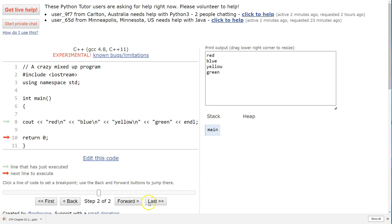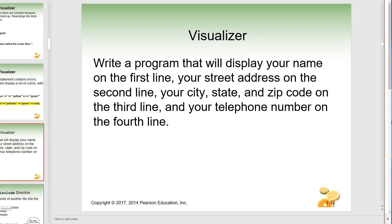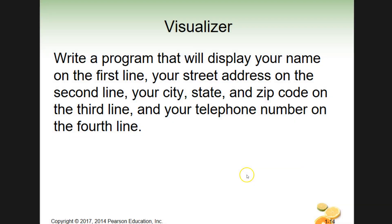Our last piece for this section is to have you write your own program. You can use the things we've been doing as a base. Write a program that displays your name on the first line, your street address on the second line, your city/state/zip code on the third line, and your telephone number on the fourth line. Those are your instructions. I'm going to pause the video - go ahead and try that, then come back and I'll walk you through it.